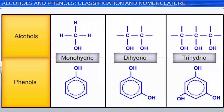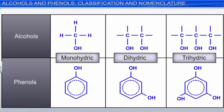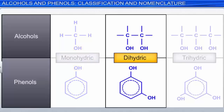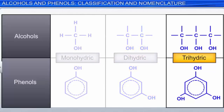Alcohols and phenols can be classified based on how many hydroxyl groups are present. Monohydric alcohols and phenols have one hydroxyl group. Dihydric alcohols and phenols have two hydroxyl groups, while trihydric alcohols and phenols have three hydroxyl groups.